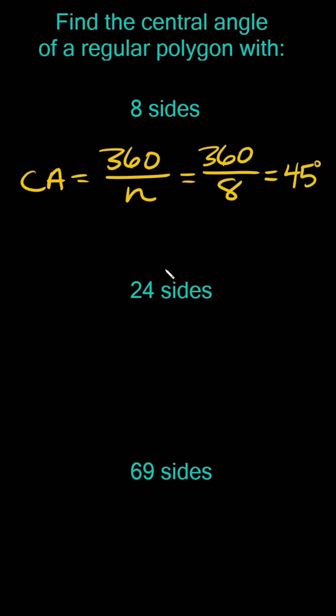All right, here we have a regular polygon with 24 sides. So the central angle here would be equal to 360 divided by 24, and that's equal to 15 degrees.